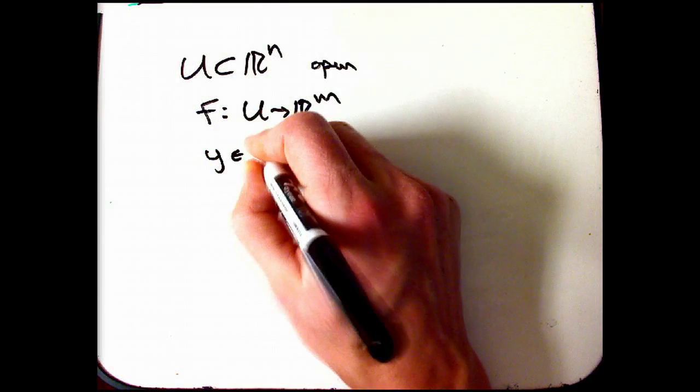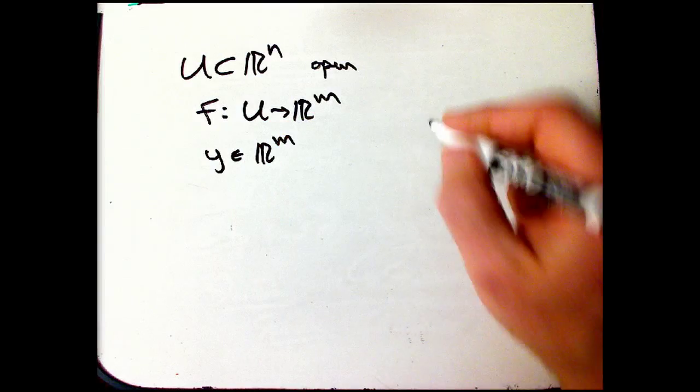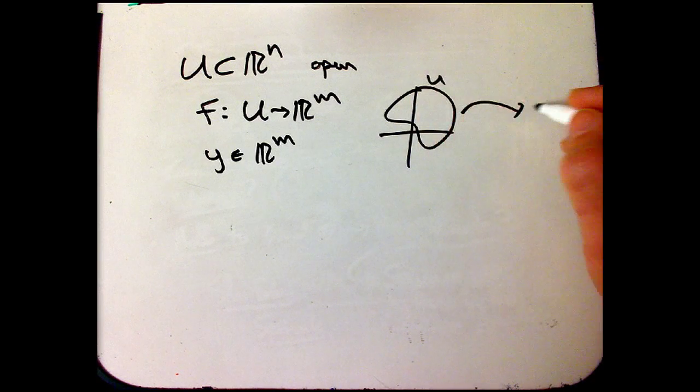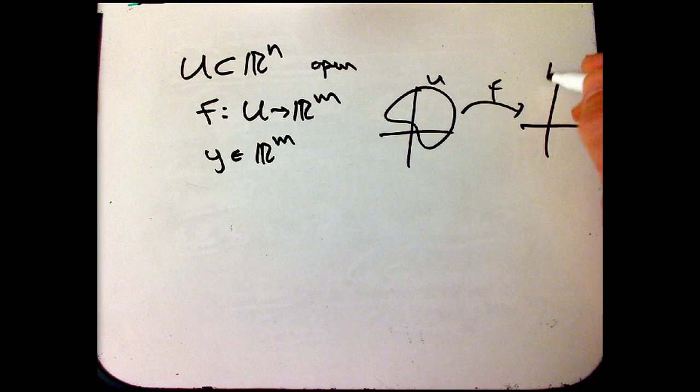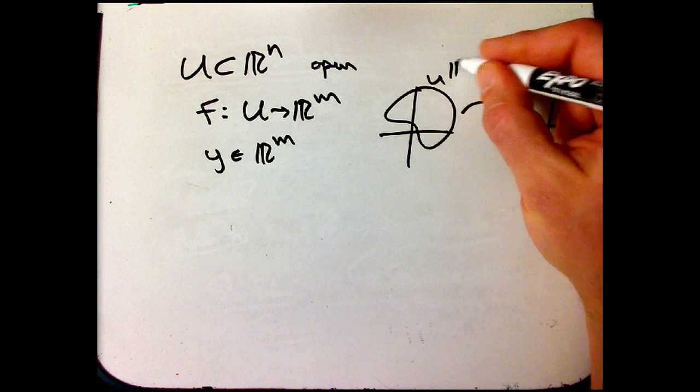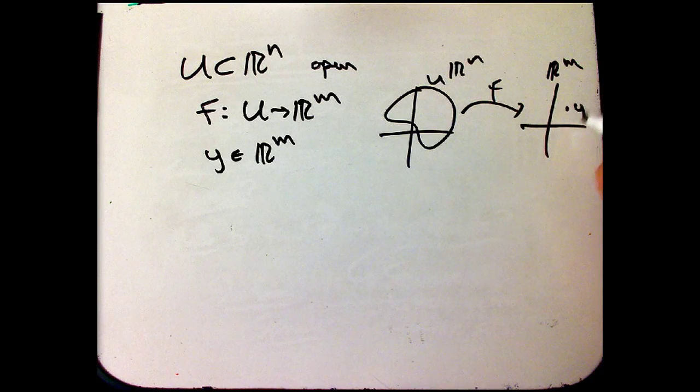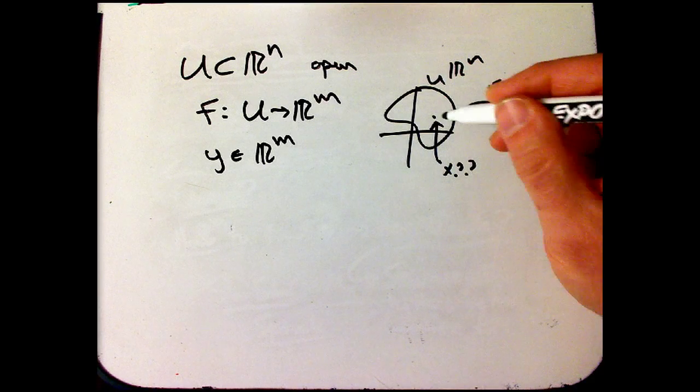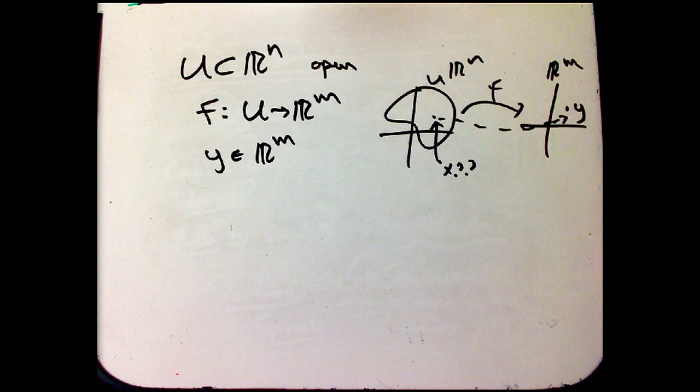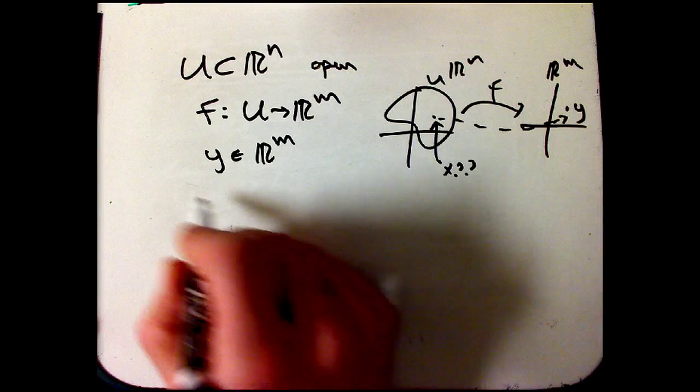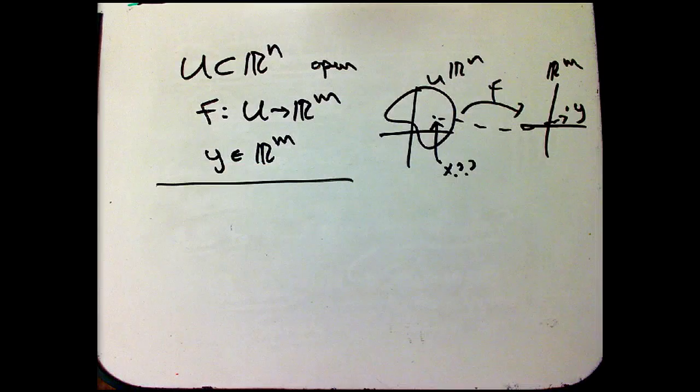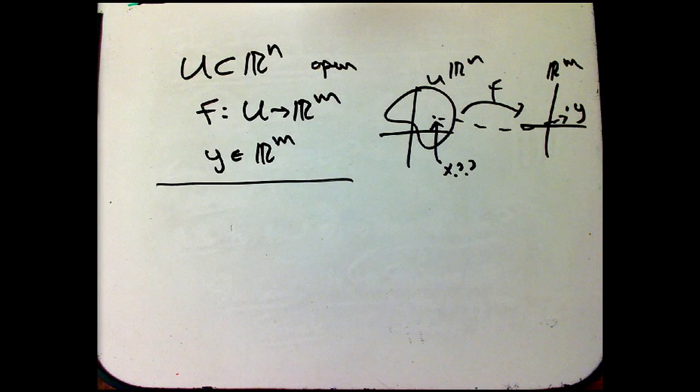And we have y in R^m, so here's the picture. Again, here's our U, here's f, here's our R^m, here's our R^n. And we got some y, and the question is, can I find an x that actually maps to y? That's the existence question. And that's actually what I'm going to focus on. I'm not going to focus on the uniqueness so much, but the existence and the practicalities of finding it are going to be important.